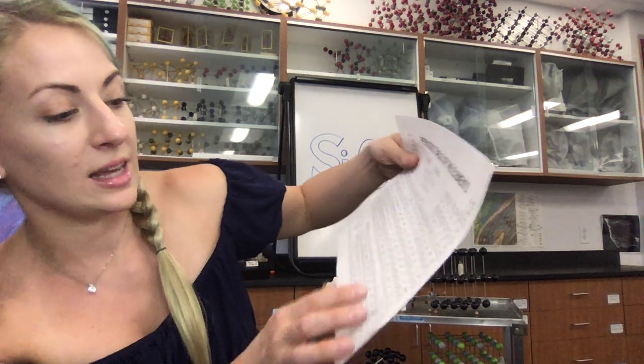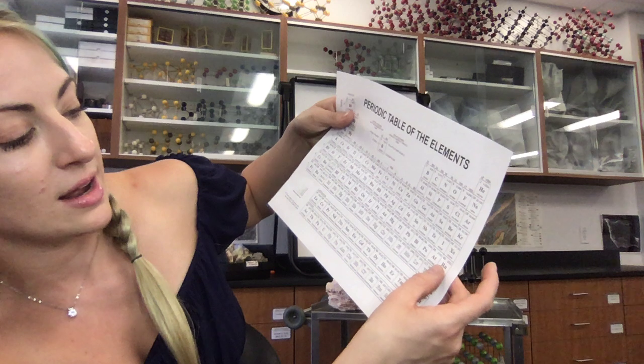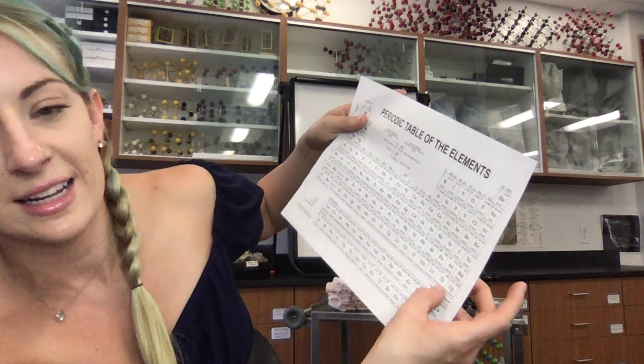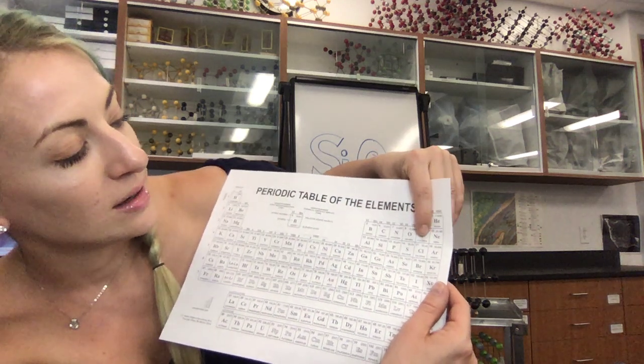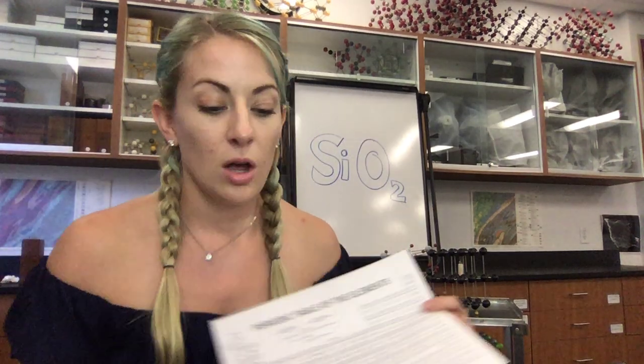We're not going to see any iodine or astatine or tennessine elements. But we are going to see the fluorine, chlorine, and bromine types of minerals commonly in Earth's crust. So for our halide group, it has to do with the halogens grouping on elements.